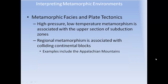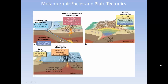High-pressure, low-temperature metamorphism is associated with the upper sections of subduction zones. Regional metamorphism is associated with colliding continental blocks — examples include the Appalachian and Himalaya Mountains. Contact and hydrothermal metamorphism occur through subduction zones; when the plate gets deep enough it partially melts, producing contact metamorphism as magma plumes rise. The facies diagram shows granulite, amphibolite, green schist, and zeolite facies, with burial metamorphism and hydrothermal metamorphism at mid-ocean ridges.